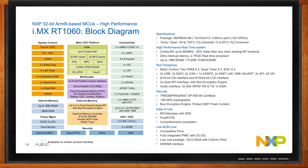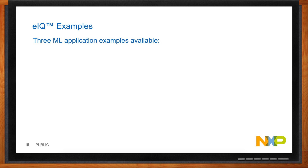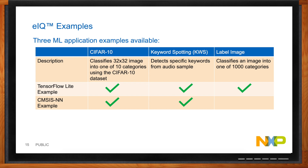The EIQ software package comes with three categories of examples: CIFAR-10 for simple image classification; keyword spotting, which takes audio and identifies a handful of recognized keywords; and label image for more advanced image classification. Labs on NXP's website teach you how to retrain the model to recognize your own images. There's also a live demo using keyword spotting — running CMSIS-NN with the onboard microphone to identify keywords like 'up' and 'down' using the neural network.